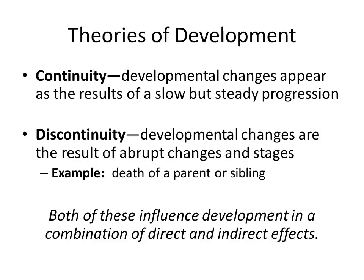Discontinuity involves developmental changes that occur as a result of an abrupt change. The biggest discontinuity for most children is the death of a parent or a sibling, which could radically change a child's development. For example, a 3 or 4 year old who is beginning to communicate and loses an older sibling may become reluctant to communicate because of that discontinuity trauma occurring just as they were beginning to communicate rationally. Both continuity and discontinuity influence development through a combination of direct and indirect effects.